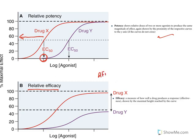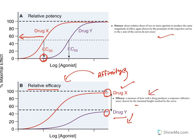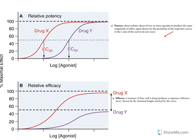Coming to relative efficacy — efficacy means the ability to get a response. Affinity means the ability to bind with the receptor; if the majority of the drug is binding, efficacy will be more. Drug X is giving maximal response whereas Drug Y is not giving maximum response — so Drug X has higher efficacy and affinity, whereas Drug Y has lower efficacy and lower affinity. Efficacy is a measure of how well a drug produces a response, shown by the maximal height reached by the curve.